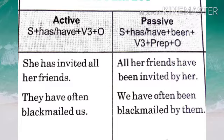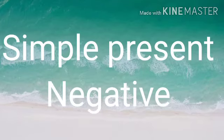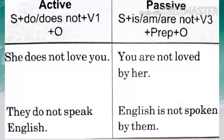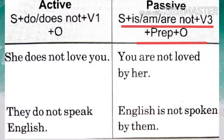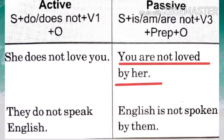Now let's come to negative sentences in simple present tense. 'She does not love you.' When you change it to passive voice, remember there is the word 'not.' The rule is: subject + is/am/are + not + third form of verb + preposition + object. So 'she does not love you' changes to 'You are not loved by her.'